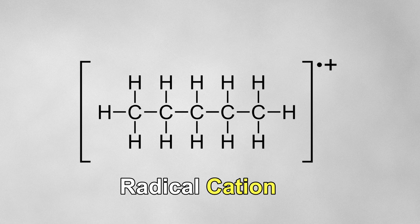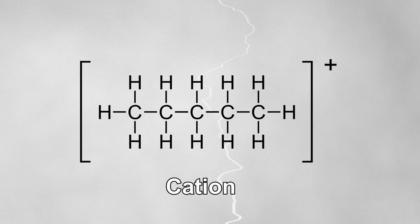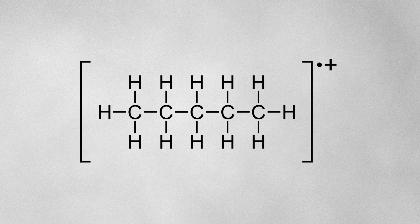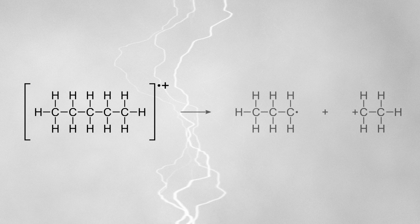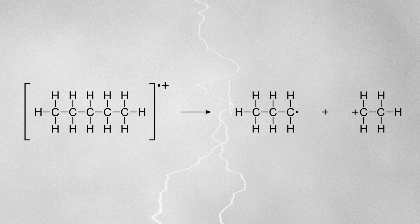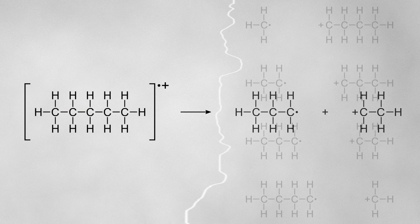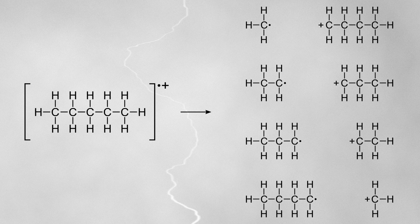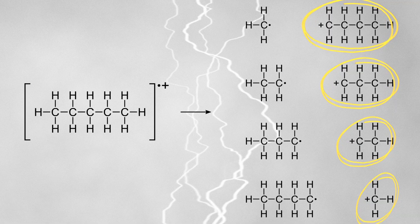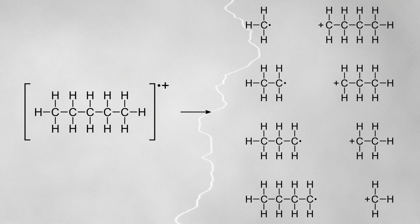For A-level chemistry, you can just consider this to be a regular cation, but to give a more complete understanding, I'm going to explain the actual situation with a radical cation. Due to the high energies of the electron impact, the radical cation will often break down into fragments, one being a radical and the other being a cation. Since different electrons can be knocked off different molecules in the sample, various bonds throughout the sample will be weakened, so the radical cations can fragment in lots of different ways, resulting in an assortment of fragments. Usually, some of the unfragmented molecular ions survive and are detected.